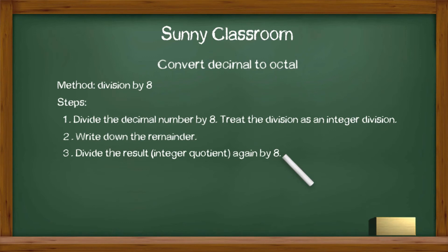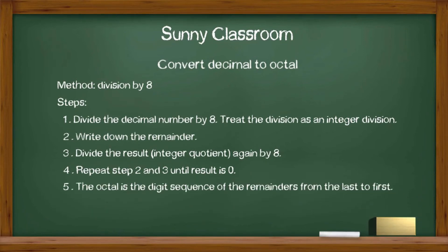Step 3: Divide the result again by 8. Step 4: Repeat step 2 and 3 until the result is 0. Step 5: The octal is the digit sequence of the remainders from the last to first.